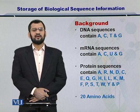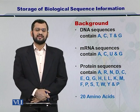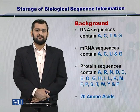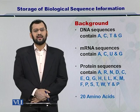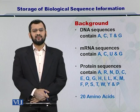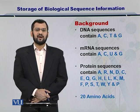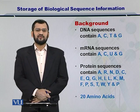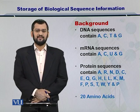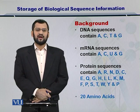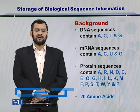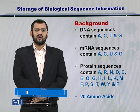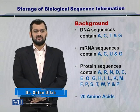You know that the biological sequence information may be of three different types. The first one can be the DNA. At the DNA level, the sequence information primarily consists of A, T, C, and G. While for the RNA, the information is changed a little bit and you have A, U, G, and C.